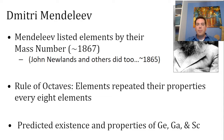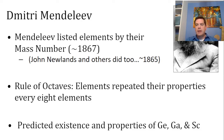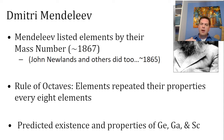He noticed a pattern — chemists love patterns. The pattern was called the rule of octaves. How many notes are in an octave? Eight, of course. It turns out Mendeleev noticed that if you list the elements in order of their mass number, about every eight elements or so, they started to have similar properties.